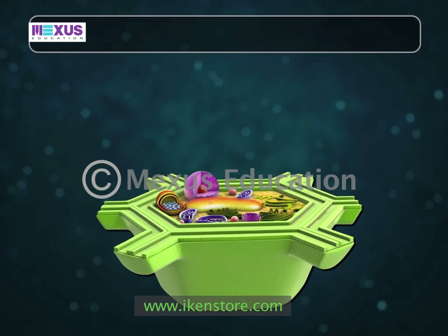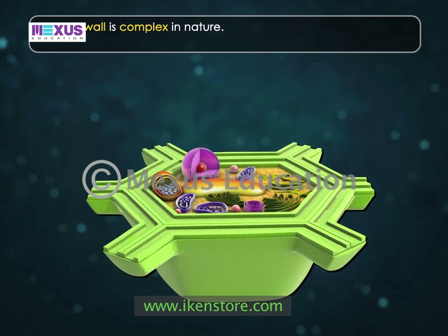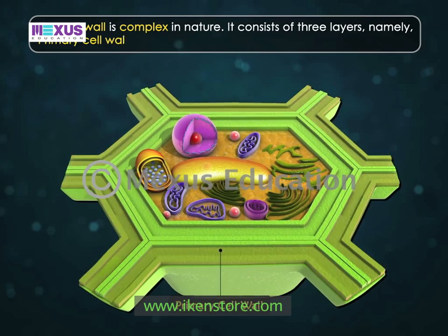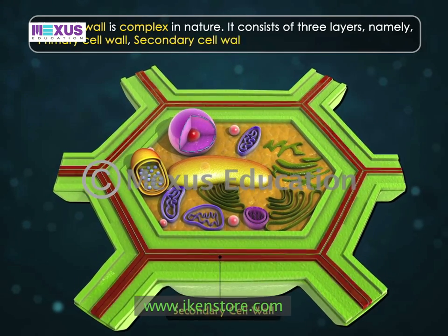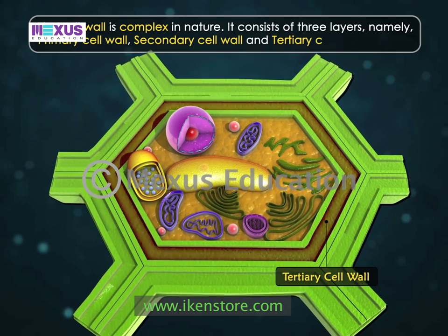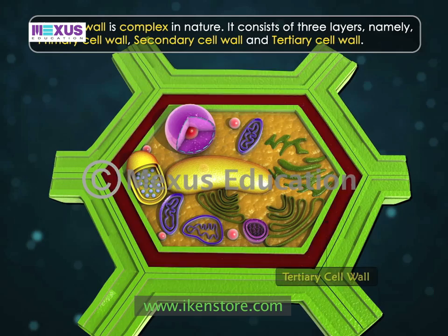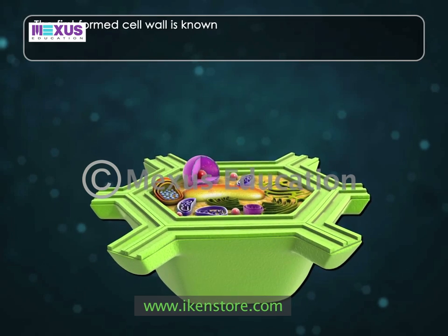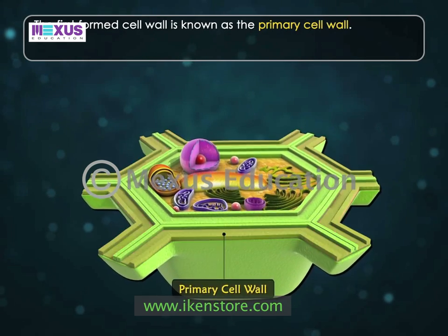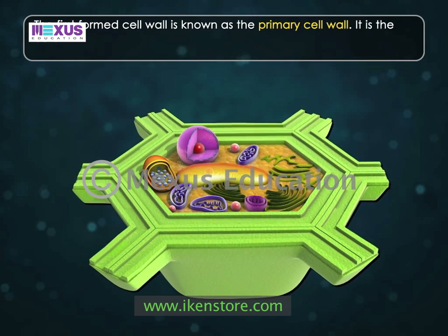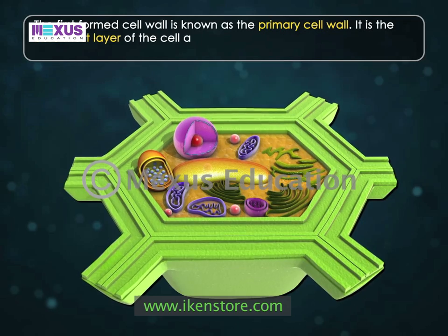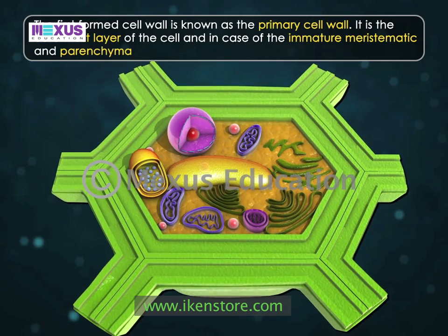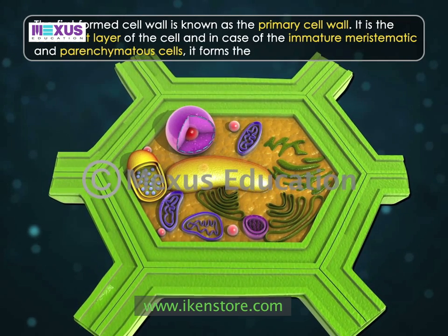The cell wall is complex in nature. It consists of three layers, namely the primary cell wall, the secondary cell wall, and the tertiary cell wall. The first formed cell wall is known as the primary cell wall. It is the outermost layer of the cell, and in the case of immature meristematic and parenchymatous cells, it forms the only cell wall.